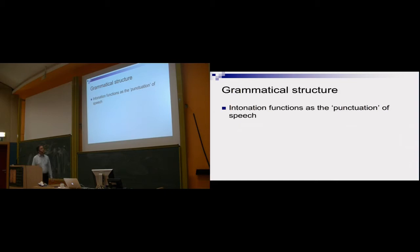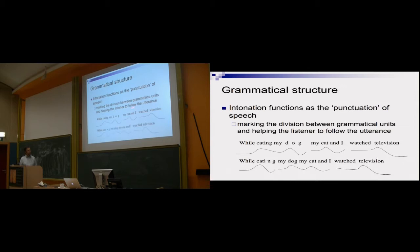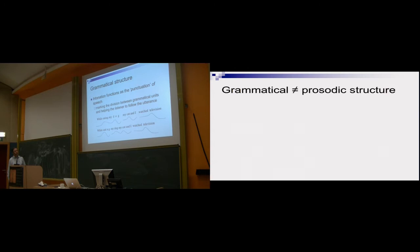Second question that I put at the beginning, what can intonation do for you? Well, it conveys information beyond the words in the utterance, and we'll look at some of these grammatical, semantic information about the discourse and the interaction between two people who are talking, your attitude, and it also is one of the things that makes people who speak a different dialect sound different. So what about grammatical structure? In a way, intonation is a punctuation of speech. It marks divisions between grammatical units, and it helps the listener parse or group the utterance in a way that's helpful for understanding grammar. So if I say, while eating my dog, my cat and I watch television, you have a rather unpleasant picture of two, a cat and me, eating a dog. If you get the intonation right, while eating, my dog, my cat and I watch television, you have a much more pleasant domestic scene.